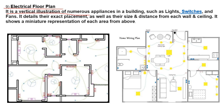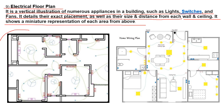The next one is the electrical floor plan. It is a vertical illustration of numerous appliances in buildings such as lights, switches, and fans. It details their exact placement as well as their size and distance from each wall and ceiling, showing a miniature representation of each area from above. Here we see a floor plan showing how the electrical connections are to be done in a room, including a ceiling fan, and how proper placements of switches, fans, and all home appliances are shown.